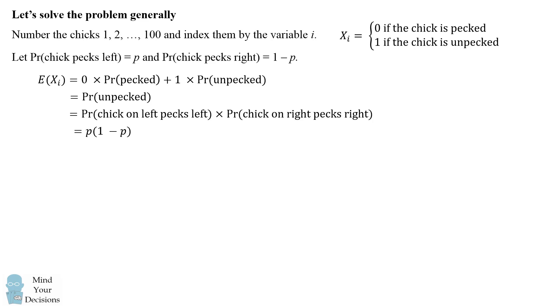We now need to figure out how many chicks are expected to be unpecked. This will be the expected value of the sum of the random variables.